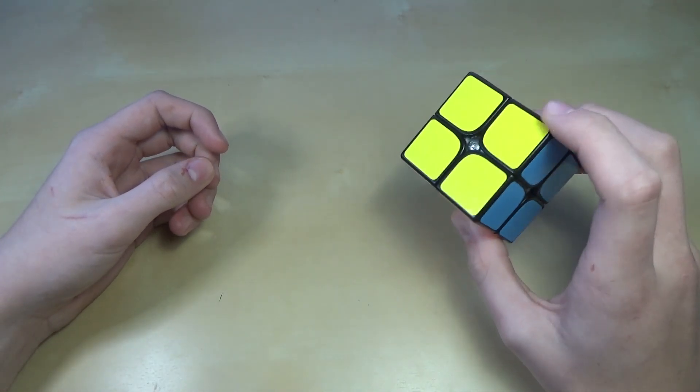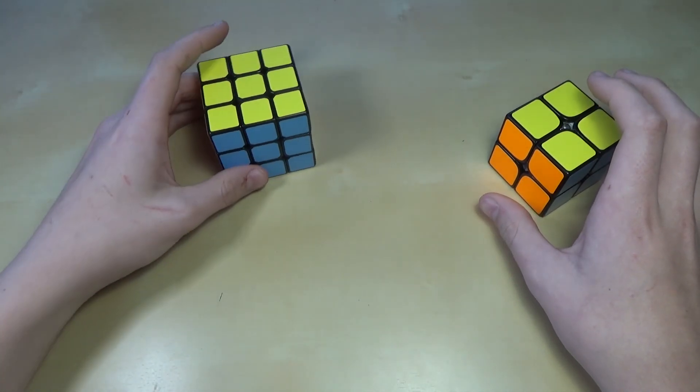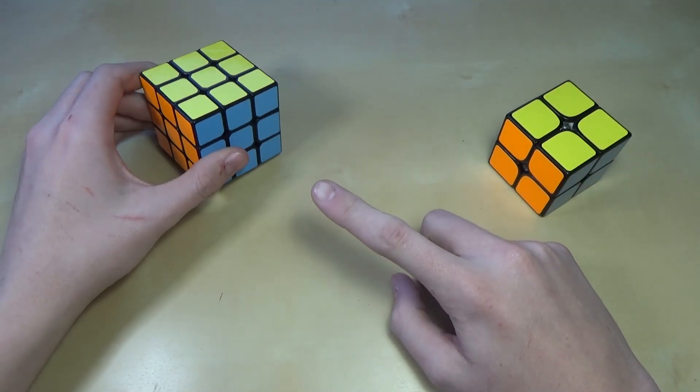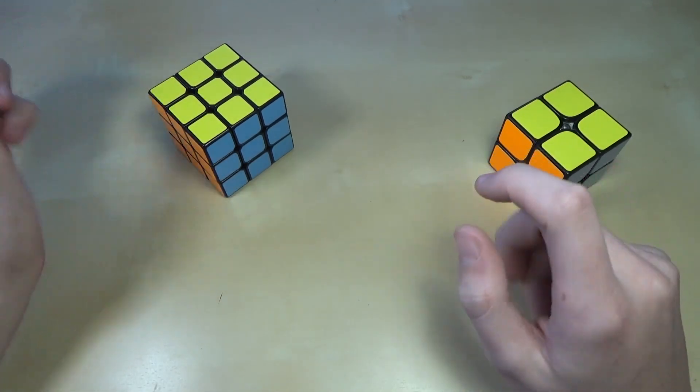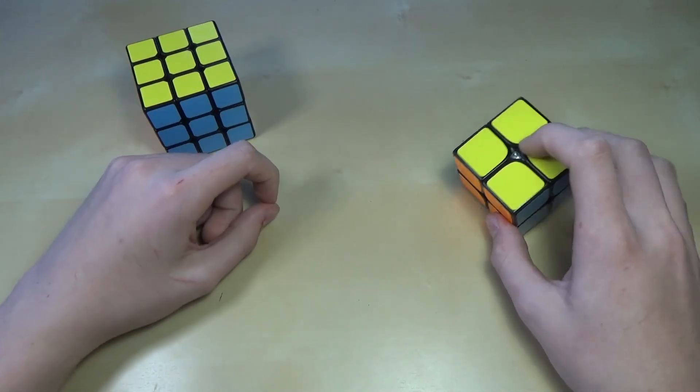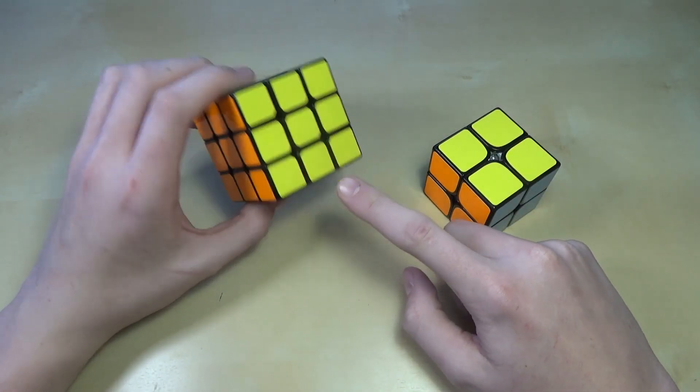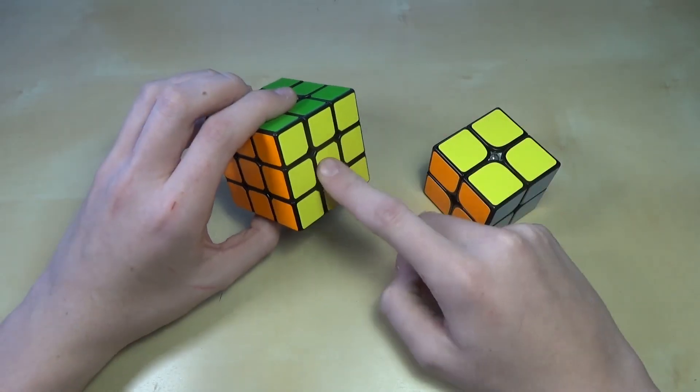The basic method I'm going to show you today on the 2x2 is actually based off that of the 3x3. If you don't already know how to solve a 3x3, I'd actually recommend learning that first. It may seem counterintuitive, but every single algorithm that you'll need for the 2x2 but one, you'll actually learn in the 3x3 method. And so it'll actually benefit you from learning that one first.